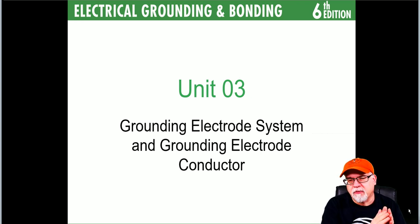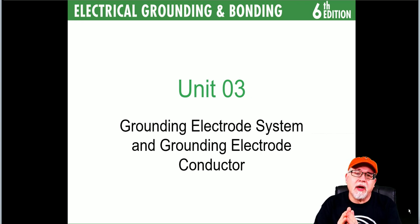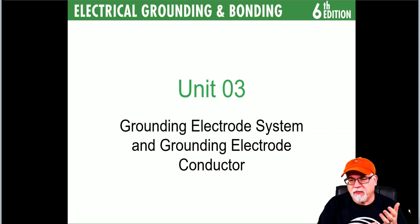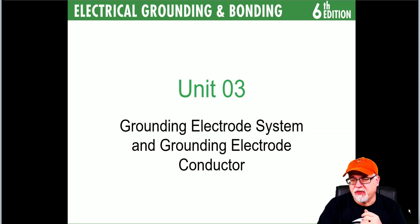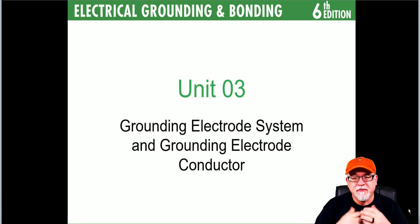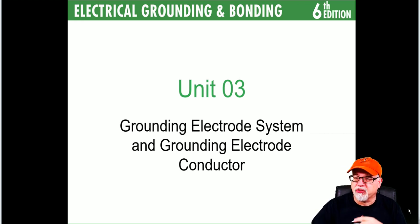You start out at 250.4, 250.6 objectionable currents, and work your way up through tables like 250.122 and 250.102(C)(1). Unit three deals with the grounding electrode system in 250.50 as well as 250.52, and all the things that go along with grounding electrode systems and grounding electrode conductors.